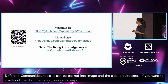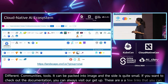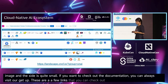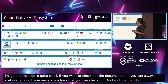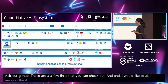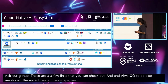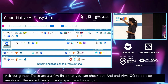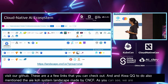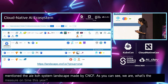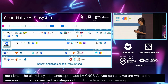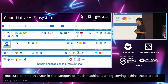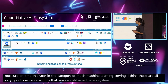If you want to check out the documentation, you can always visit our GitHub — here are a few links you can check out. I'd also like to mention the AI ecosystem landscape made by CNCF. As you can see, WasmEdge runtime was added this year in the category of machine learning serving. I think these are all very good open-source tools you can utilize in this ecosystem.